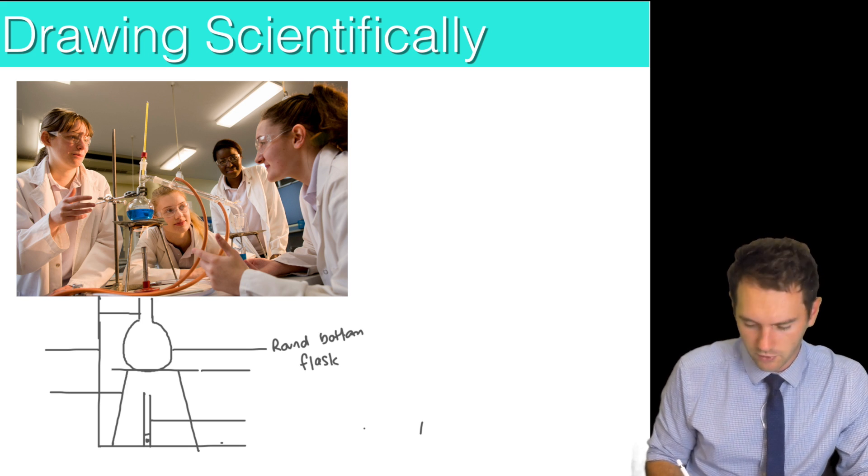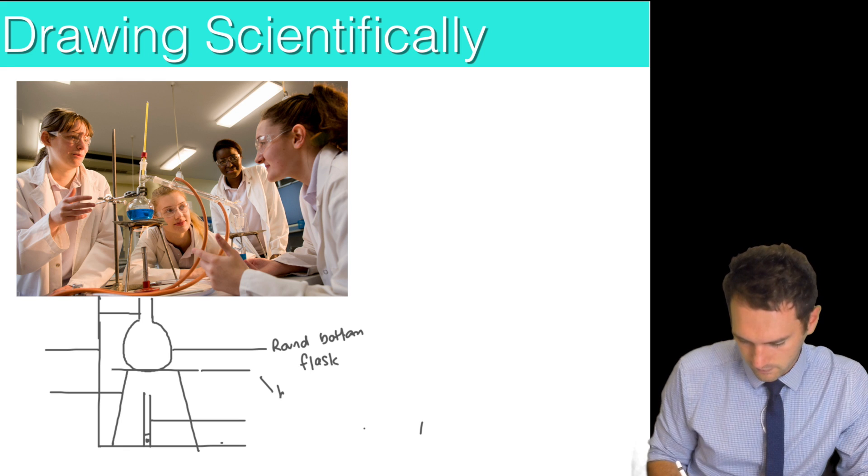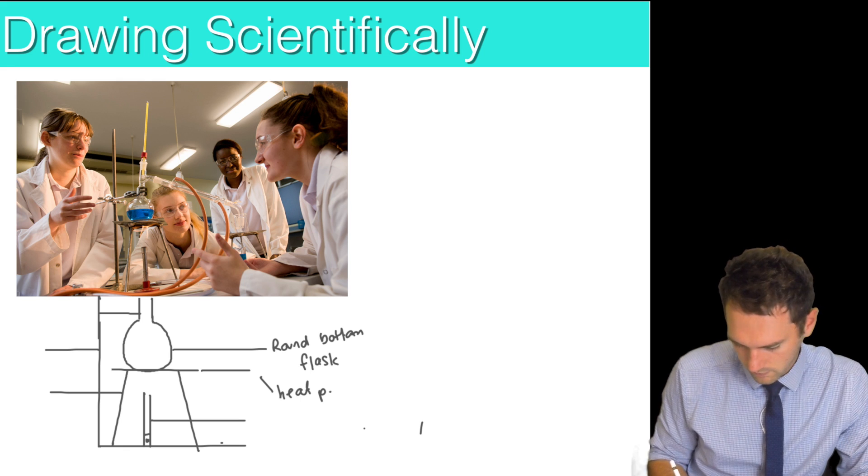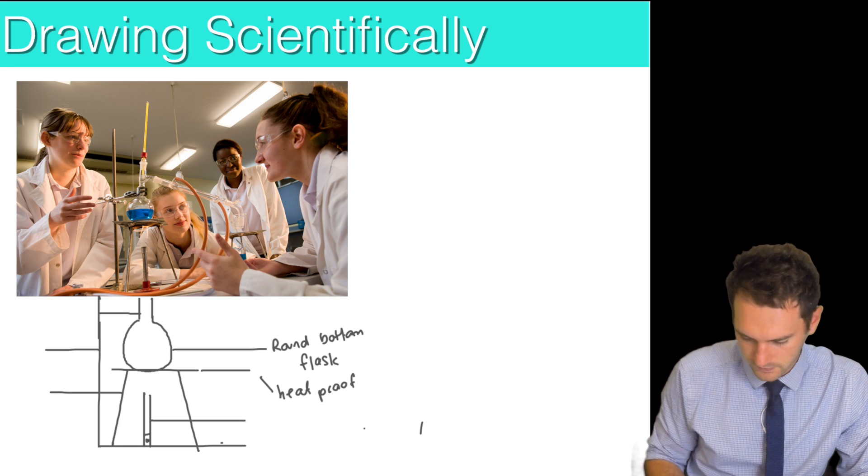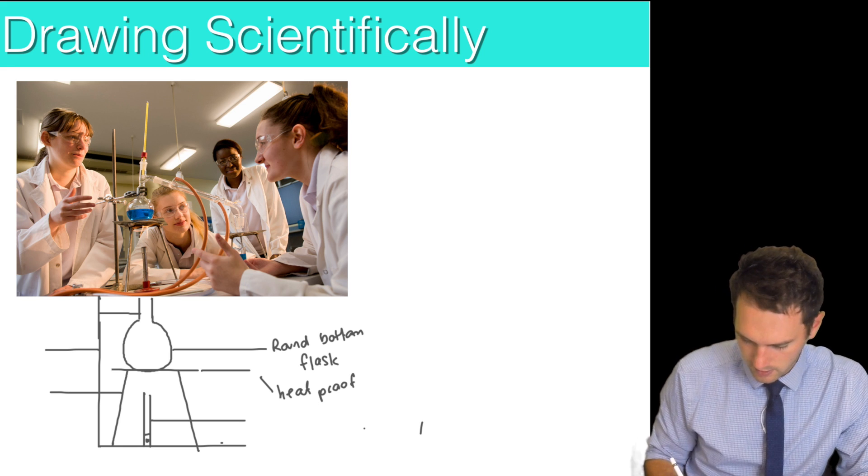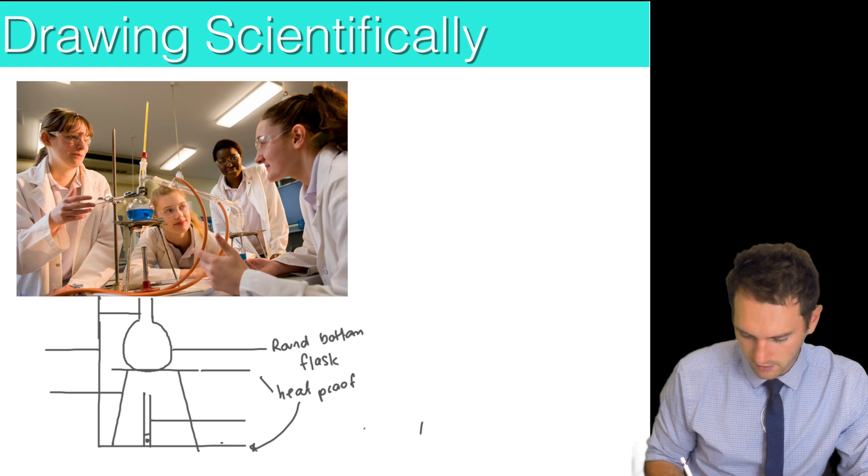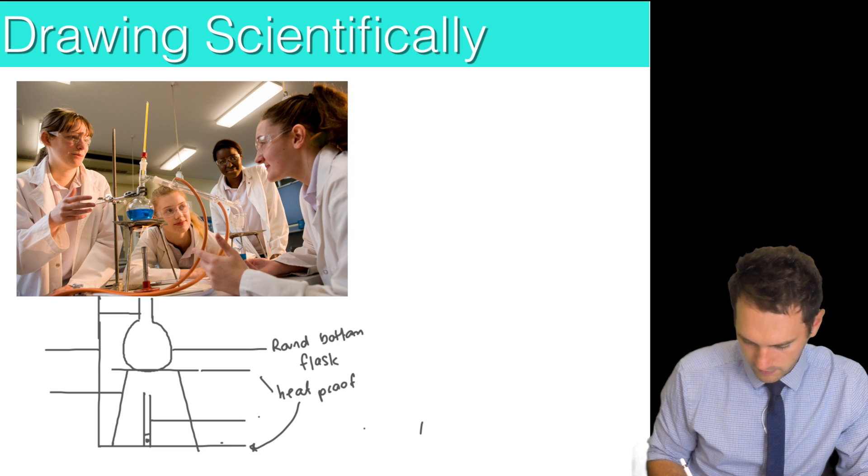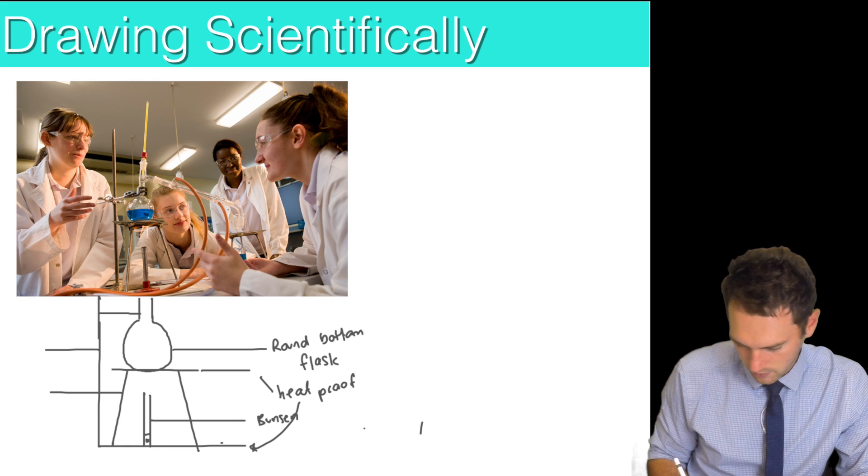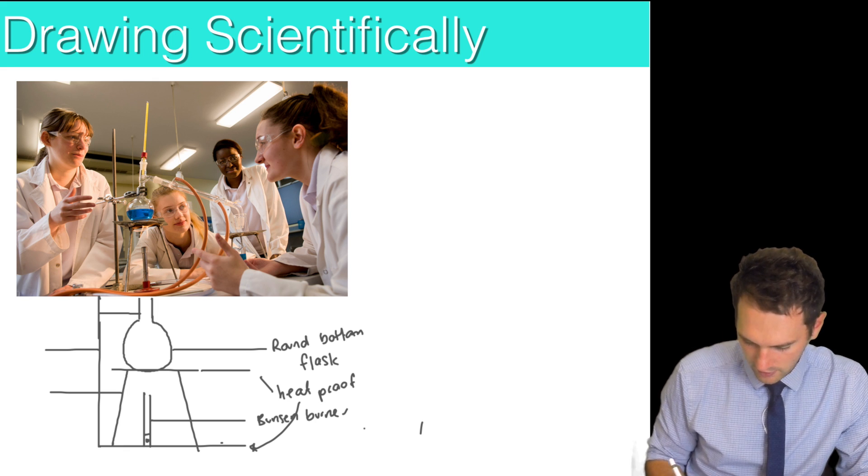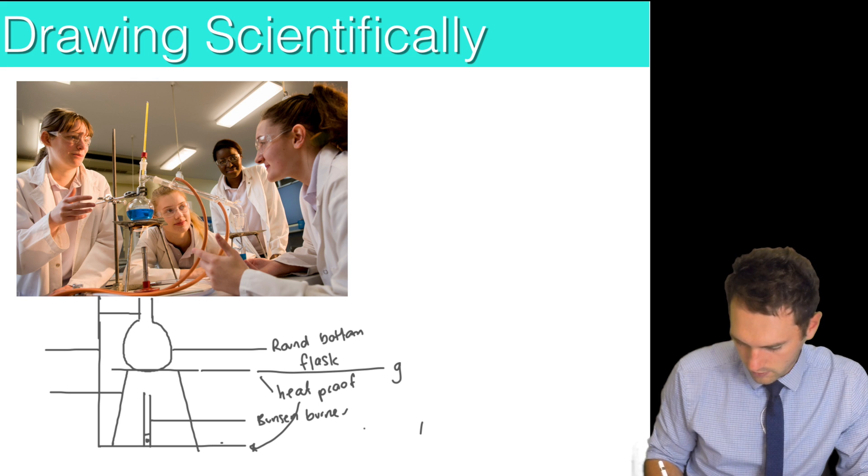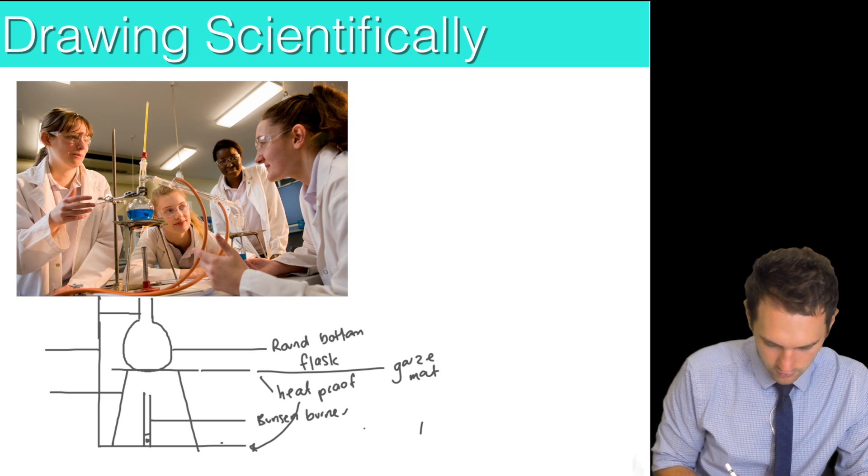Here we've got our heatproof mat, sorry the gauze mat. I need to get rid of that, put that down there. Obviously I wouldn't do that in the real one. We've got our Bunsen burner and this one is actually our gauze mat and our tripod.